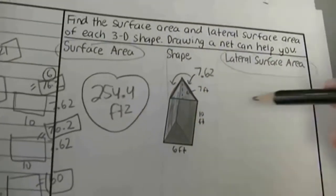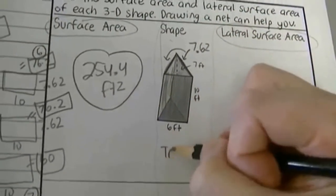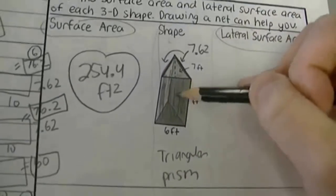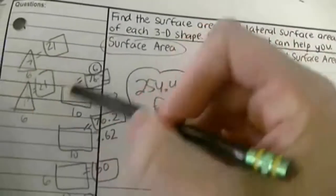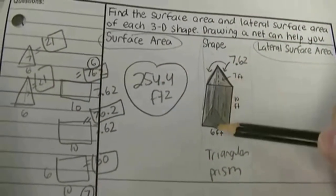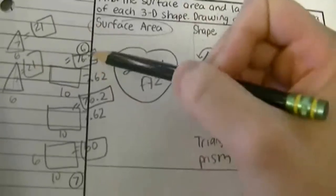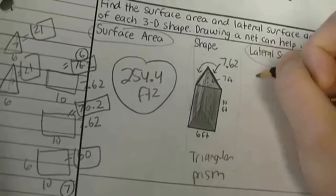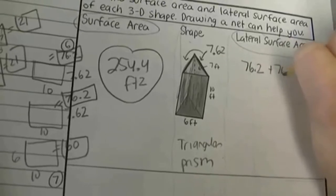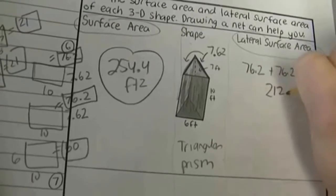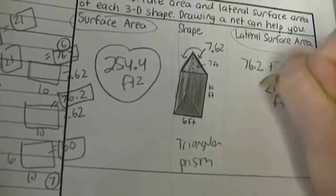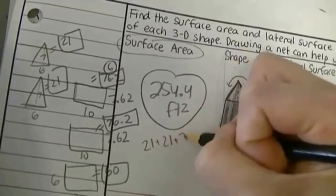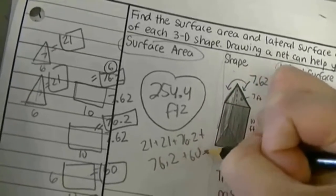For the lateral surface area of this triangular prism, you just take the area of the three rectangular sides — exclude the base and the top. So I don't add the two triangles of 21 each. I just add 76.2 plus 76.2 plus 60. To get the surface area I had added 21 plus 21 plus 76.2 plus 76.2 plus 60.